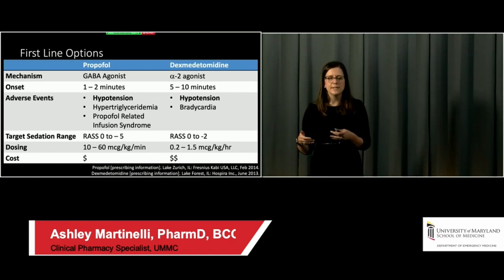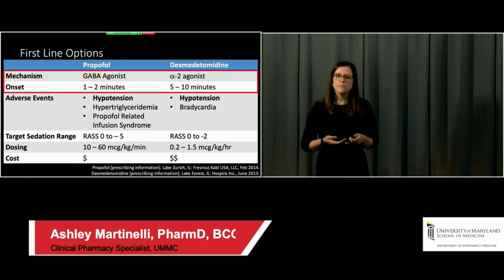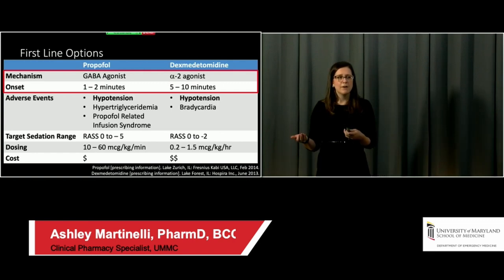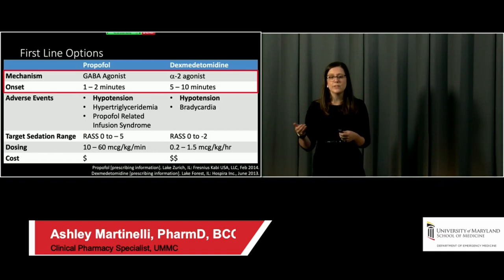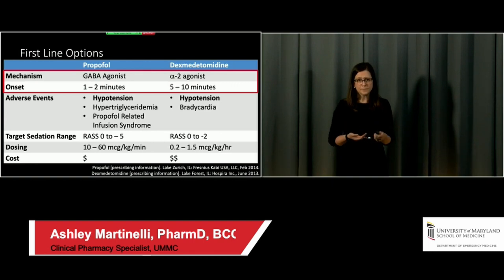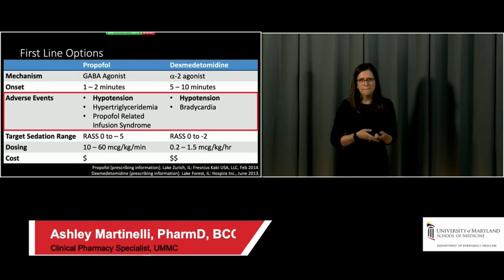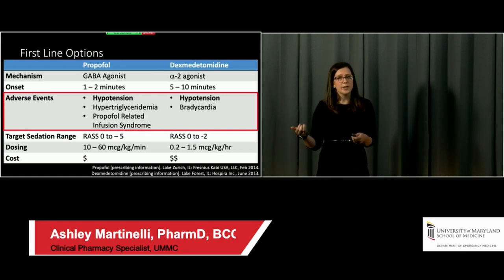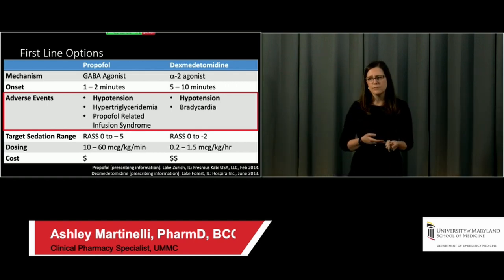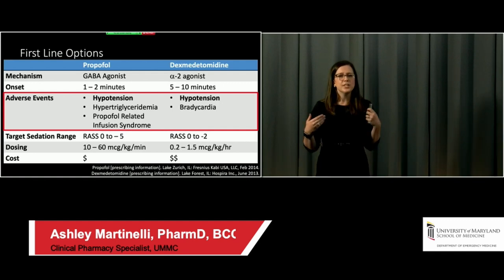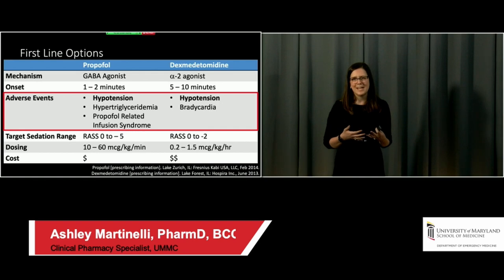Our first-line sedation options are propofol and dexmedetomidine. Propofol is primarily a GABA agonist; dexmedetomidine is an alpha-2 agonist — similar to clonidine, sharing its adverse effect profile. Both have rapid onset. Adverse events: both cause hypotension; dexmedetomidine can also cause bradycardia. With propofol, also consider elevated triglycerides (lipid emulsion) and rarely propofol-related infusion syndrome at high doses or prolonged use. In acute management, focus on hemodynamics to pick the best drug.